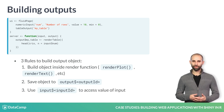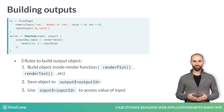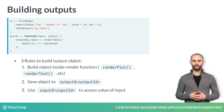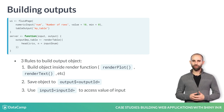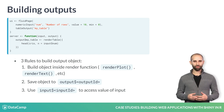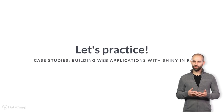Third, if you want to access any input values, use input$inputID. In our example, input$num is used in the output code, so every time the user changes the 'num' input, the table will update automatically. Now, let's see if you can use inputs and outputs on your own.